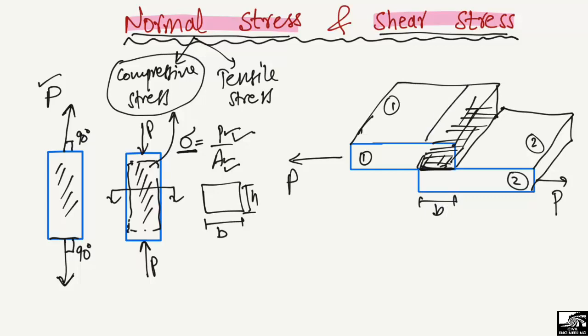If this shared area has a width of b, and the other dimension of the shared area is w, then the load which creates stresses inside this material is due to the shear load. This object will try to go in one direction and the other object will try to go in the opposite direction, and this area will be sheared. These stresses created inside the two objects will be known as shear stresses, because the area has been sheared. It is represented by tau (τ) and is equal to P over area, where A equals b times w.